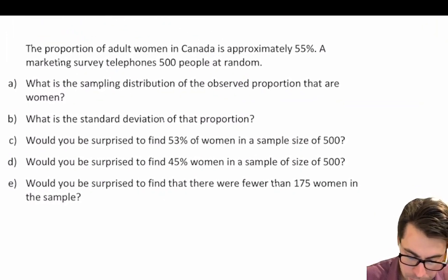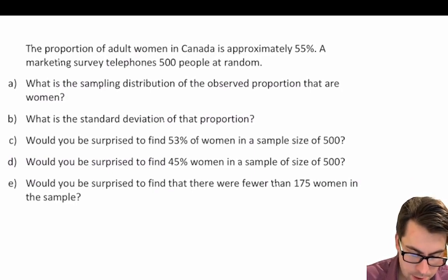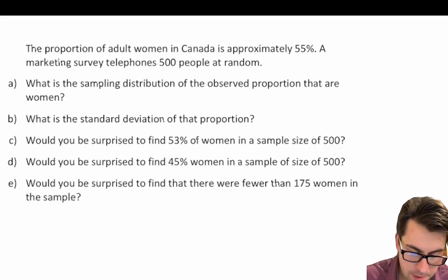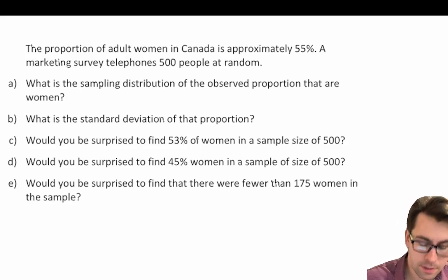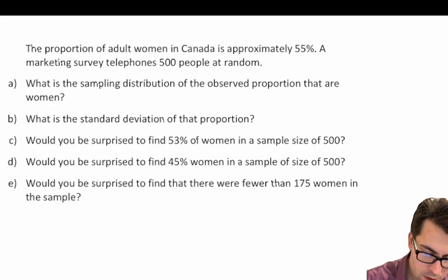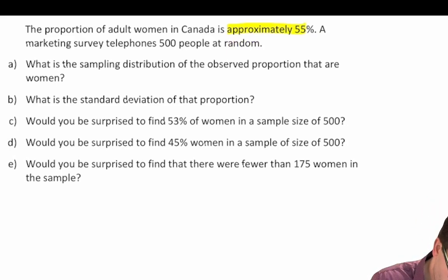The proportion of adult women in Canada is approximately 55%. A marketing survey telephones 500 people at random. What is the sampling distribution of the observed proportion that are women? First, let's cover what we already have been told. We're told the population proportion has approximately 55% women, so our value for p is equal to 0.55.